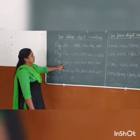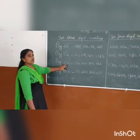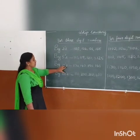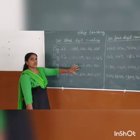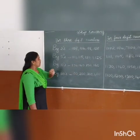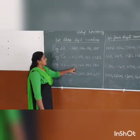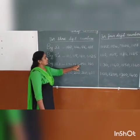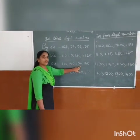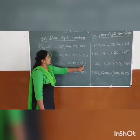Next one, by 10s. By 10, you jump away 1 number. 130, 140, 150, 160.